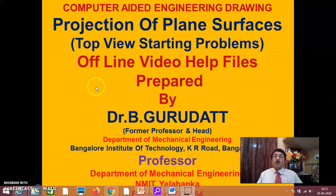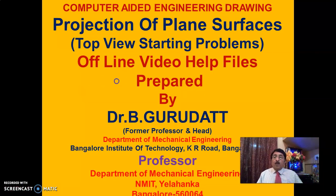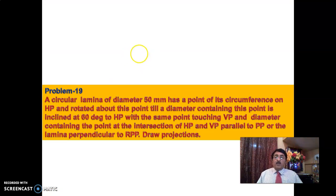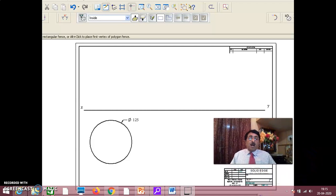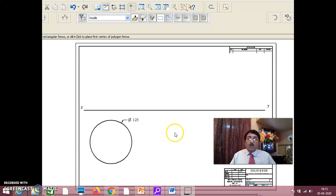Hello friends, welcome to session 9 on projection of plane surfaces. Now we will do a circular lamina. After triangular lamina, square lamina, pentagonal lamina, and hexagonal lamina, it will be circular lamina. Please understand, this circular lamina later on gets converted into solids as cone or cylinders.